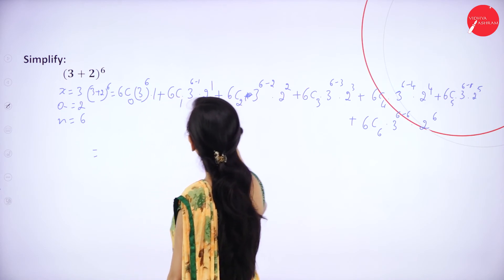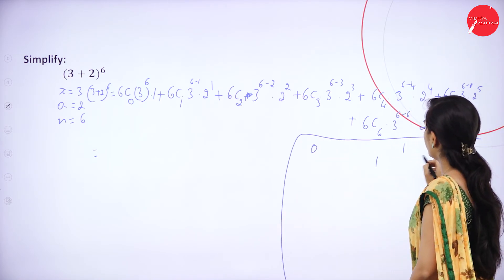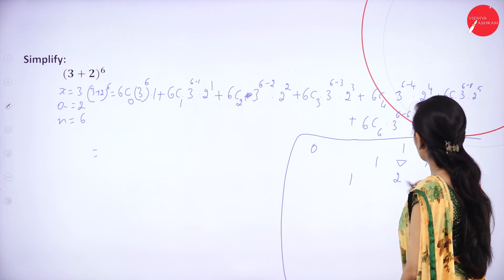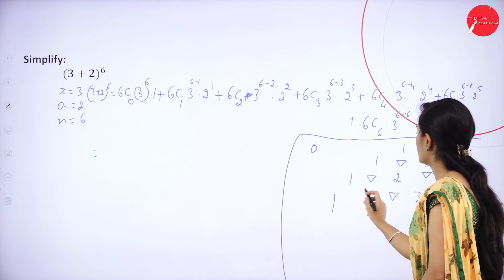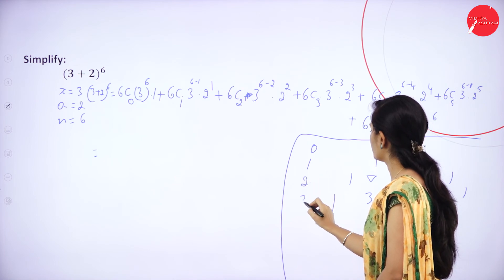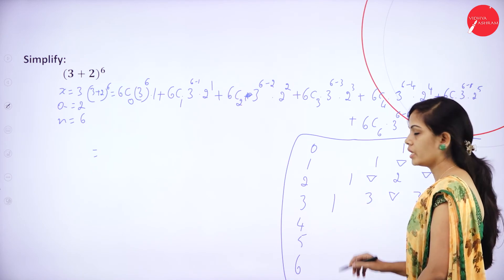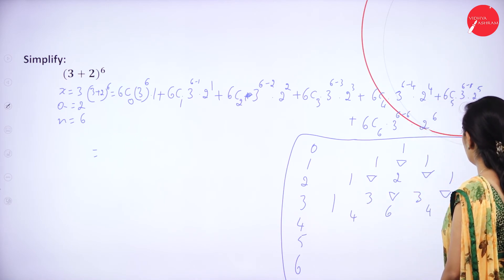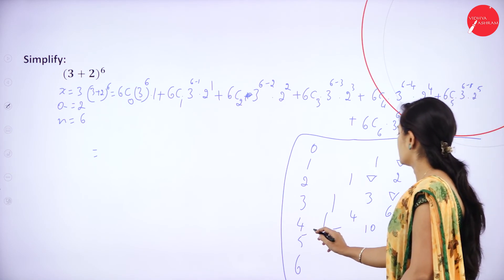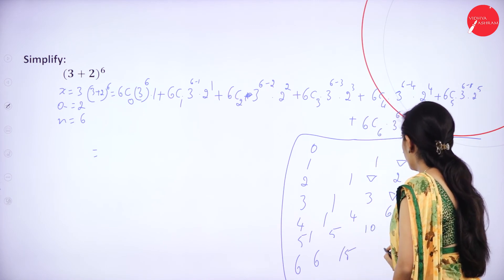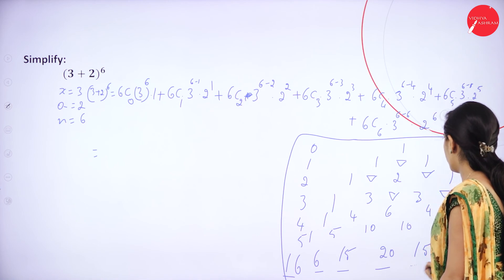Now I will apply Pascal's theorem. Index value 0 has coefficient 1. Row 1: 1, 1. Row 2: 1, 2, 1. Row 3: 1, 3, 3, 1. Row 4: 1, 4, 6, 4, 1. Row 5: 1, 5, 10, 10, 5, 1. Row 6: 1, 6, 15, 20, 15, 6, 1. So the coefficient values for index 6 are 1, 6, 15, 20, 15, 6, and 1.